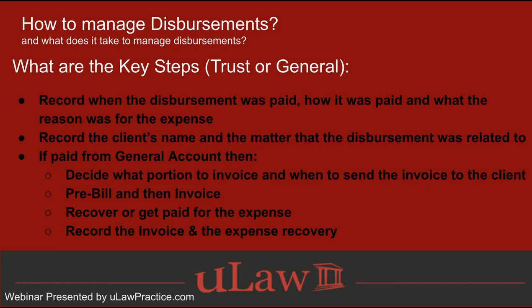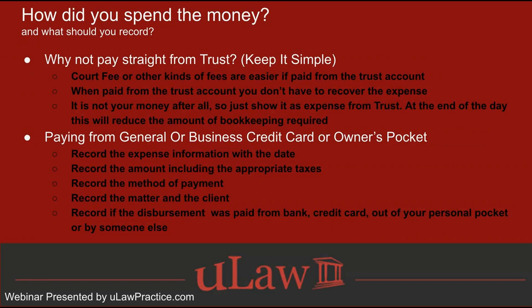There are only four steps: record the disbursement, decide what portion you're going to invoice your client and what you need to report in your books, pre-bill and send the invoice, recover the expense, and get yourself paid if you've spent for it. Break them into fragments and address each at their respective stages. It's a lifecycle: you incur a disbursement, record it, invoice it, recover it, and get paid for it.